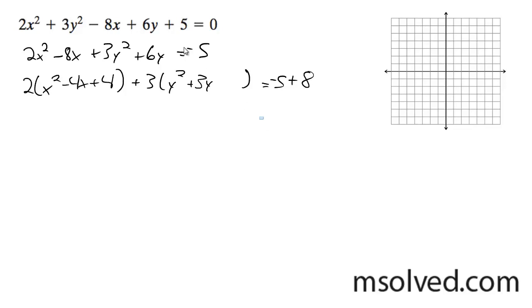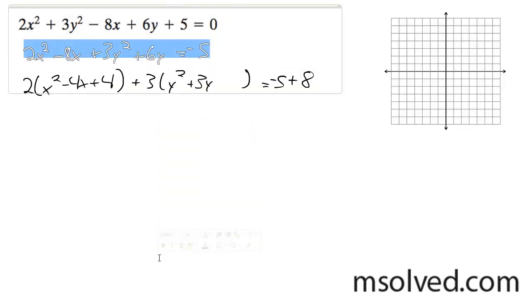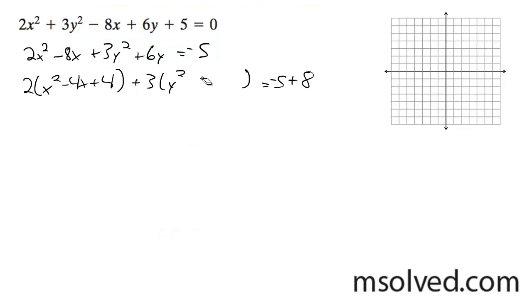That's not right. This should be 2, plus 3. Okay, so we get 2(x - 2)² + 3(y + 1)² = 6. Dividing by 6, we get (x - 2)²/3 + (y + 1)²/2 = 1.